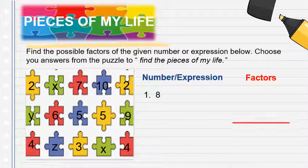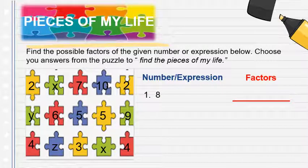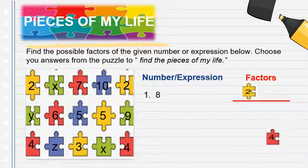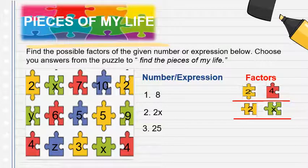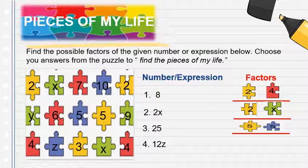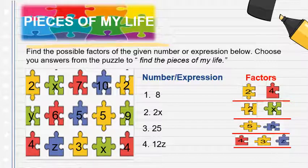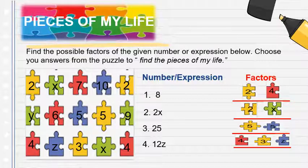Number 1: What are the factors of 8? That's 2 and 4. Number 2: 2x — the factors are 2 and x. Number 3: 25 — the factors are 5 and 5. Number 4: 12z — the factors are 4, 3, and z. Or another set of factors is 6, 2, and z.